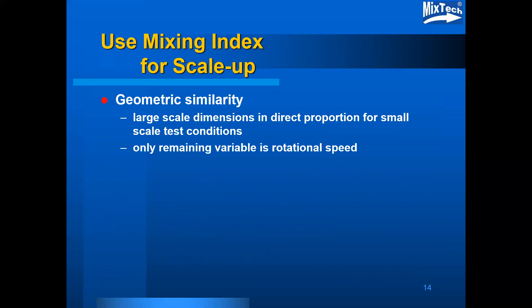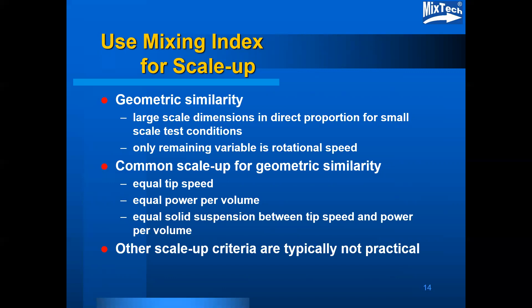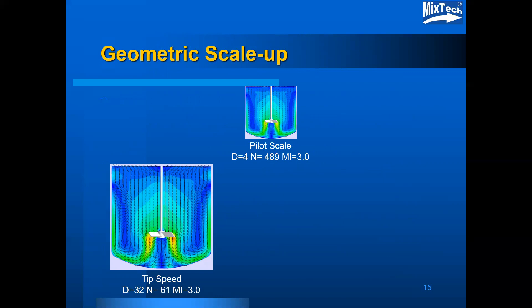Using the mixing index for scale-up can be demonstrated with geometrically similar scale-up, where all large scale dimensions are in direct proportion to small scale conditions and the only remaining variable is the rotational speed. Common scale-up criteria for geometric similarity include equal tip speed, equal power per volume, and equal solid suspension, which typically falls somewhere between tip speed and power per volume. Other scale-up criteria are commonly not practical.